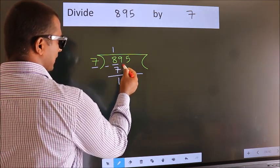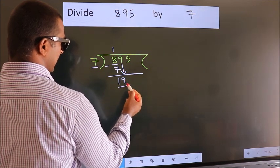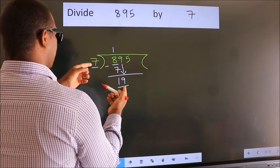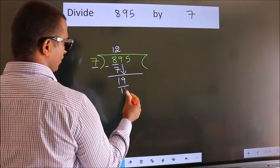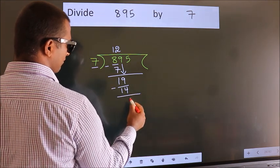After this, bring down the beside number. So 9 down. So 19. A number close to 19 in 7 table is 7 twos 14. Now we subtract. We get 5.